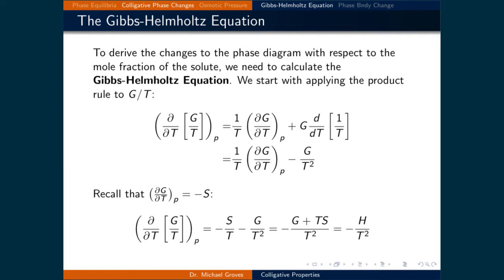Recall that the partial derivative of the Gibbs free energy as a function of temperature at constant pressure is the negative entropy. Substituting that into the above equation gives −S/T − G/T². Creating a common denominator of T² and distributing out the minus sign gives −(G + TS)/T². Using the definition of Gibbs free energy, G + TS equals the enthalpy H. Therefore, the derivative with respect to temperature at constant pressure of G/T equals −H/T².